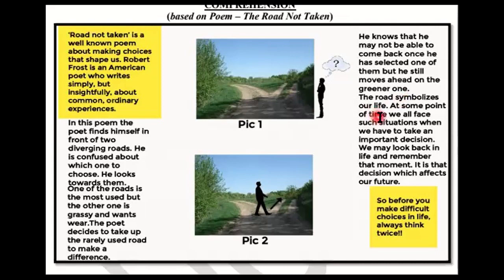These roads represent our lives. This tells us that our lives are also like these different paths, these different roads. At some point of time, we all face such situations when we have to take an important decision. Our lives always present moments when we have to make choices like this — when we have to choose between two routes.